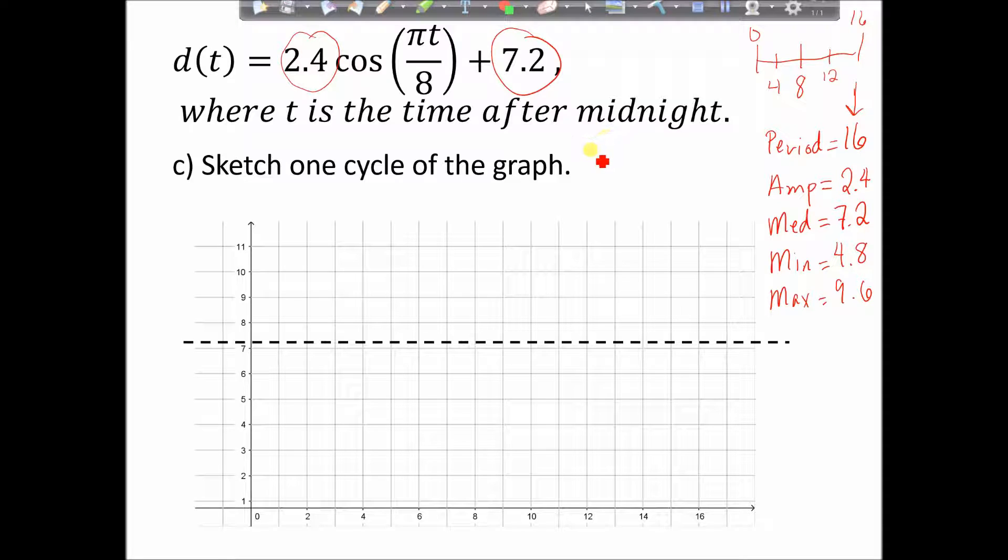So remember, because this is cos, the basic shape starts up at the max at 9.6. And then the next key value is going to happen at 4. Well, then it gets back to its median. Then at 8, it gets to its minimum of 4.8. At 12, back to its median. And then finally, 16 back up to its maximum. And then it's a matter of joining this with a nice smooth curve. So again, figuring out the period, using that to break it into the four pieces, four components of the graph. So each of the quadrants, max and min, and we're good to go from there.